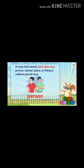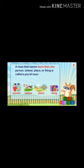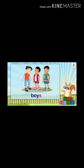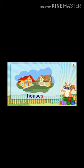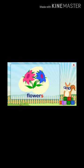A noun that names more than one person, animal, place, or thing is called a plural noun. For example, if there are three boys in the picture, we will not say 'a boy' — we will say 'boys'. There are three cats, so we say 'cats'. For house we say 'houses', and for two flowers we say 'flowers'. We add S to the noun when making it plural.